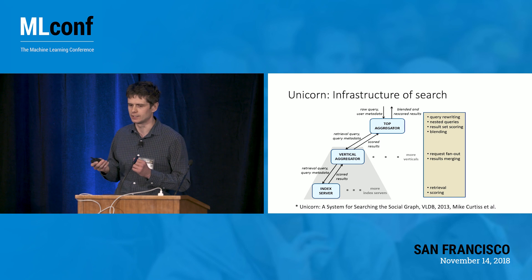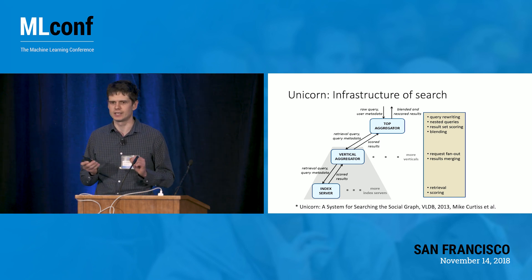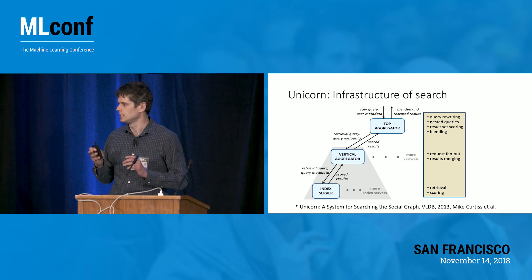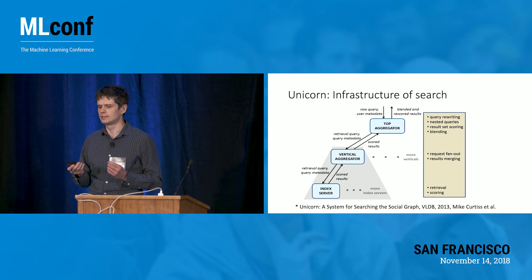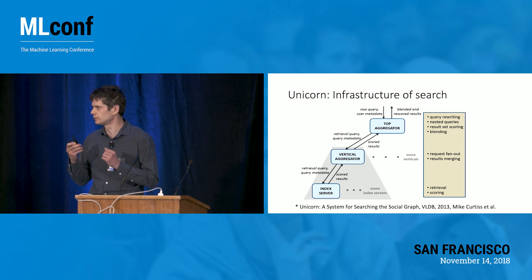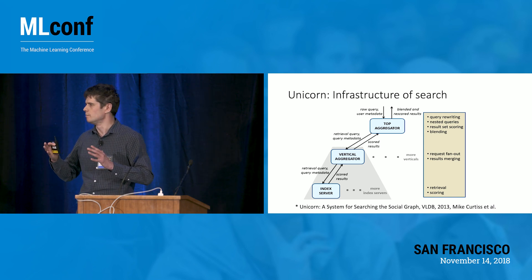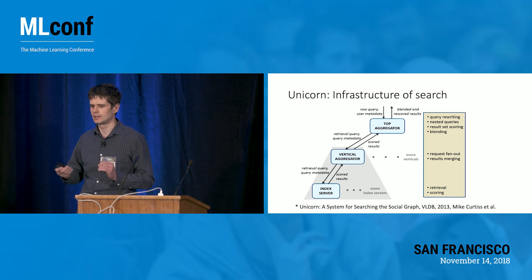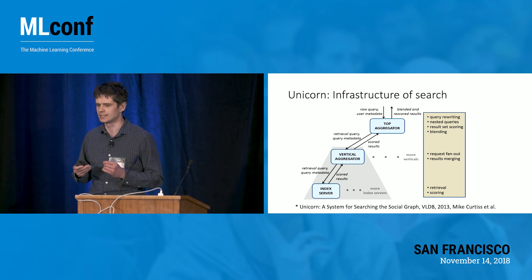Then the query is sent to the Vertical Aggregator, which fans it out to a set of distributed servers. Each index server does a retrieval from an inverted index and then does first-stage scoring to filter down the list of results, sends it back to the Vertical Aggregator, which merges results from each server, and then sends the top results to the Top Aggregator for second-stage reranking.